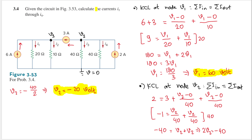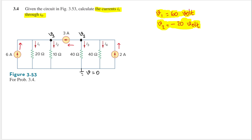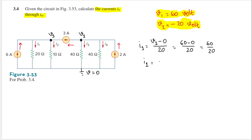Let's calculate the currents i1 through i4. After cleaning up: i1 equals (V1 minus 0) divided by 20 ohms. V1 is 60, so i1 equals 60 divided by 20, which gives i1 equals 3 amperes.